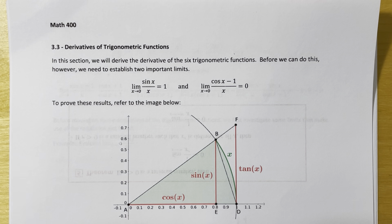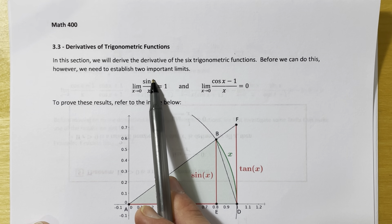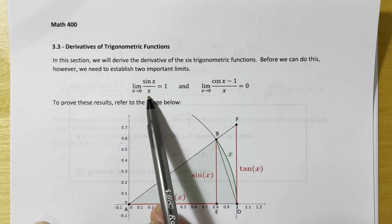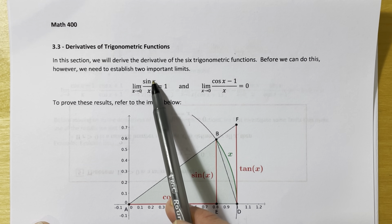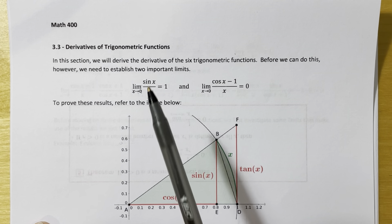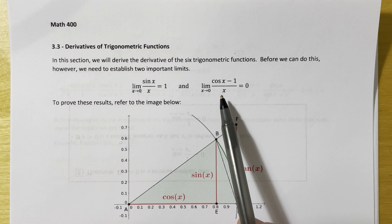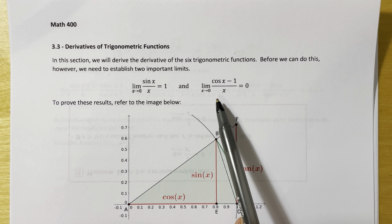Before we can get into the derivatives of sine and cosine, there are a couple of limits we need to prove first, because these will show up as we try to establish those derivatives. Starting with the limit as x approaches 0 of sine of x over x — that's equal to 1. You cannot evaluate this by direct substitution because the denominator would be 0, and the numerator would also be 0. When direct substitution gives you 0 over 0, that's a limit that usually exists but requires another approach. The second limit, as x approaches 0 of cosine of x minus 1 over x, equals 0, and can't be evaluated by direct substitution either.